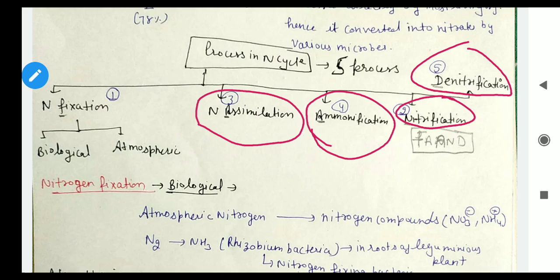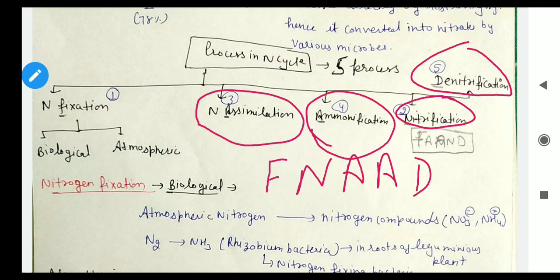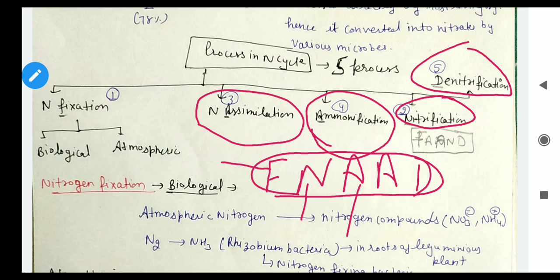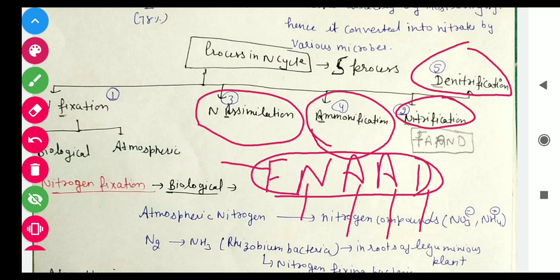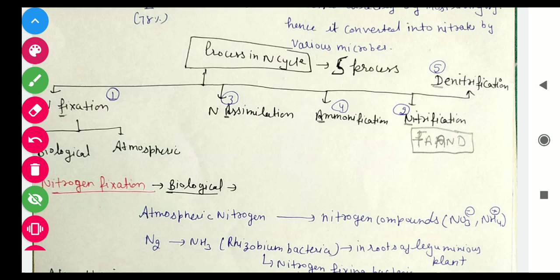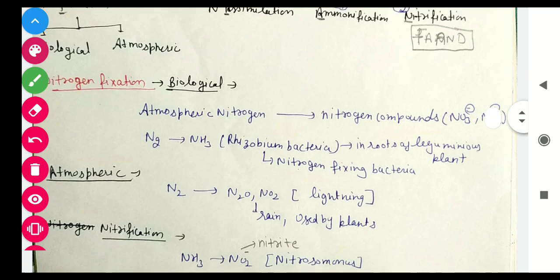To remember these five processes, you can use a mnemonic. Think of 'FNAAD': F stands for Fixation, N for Nitrification, A for Assimilation, A for Ammonification, and D for Denitrification. So the Nitrogen Cycle has a total of five processes. Now let's discuss each one, starting with the first process: Nitrogen Fixation.